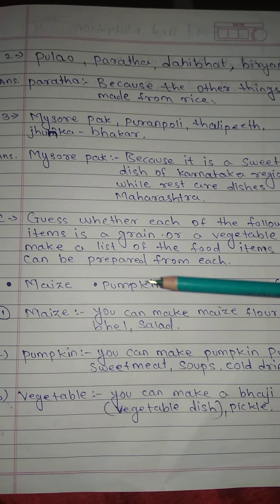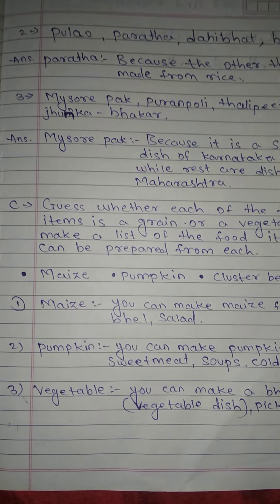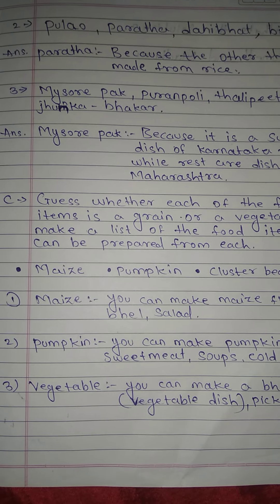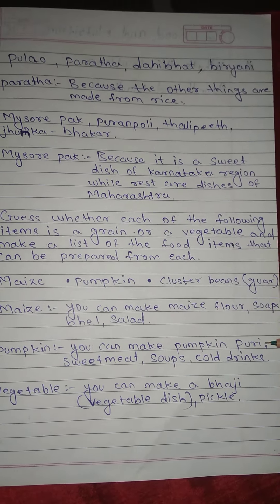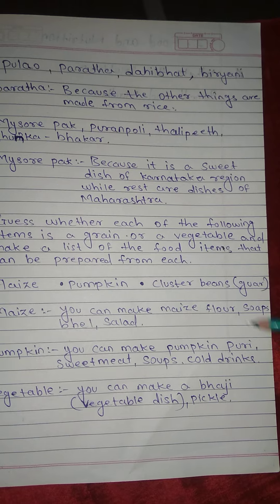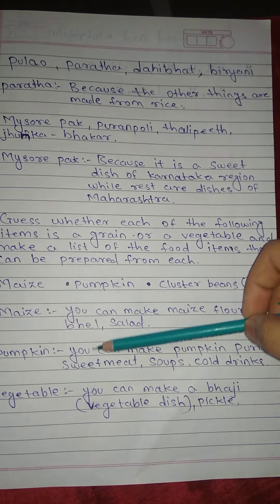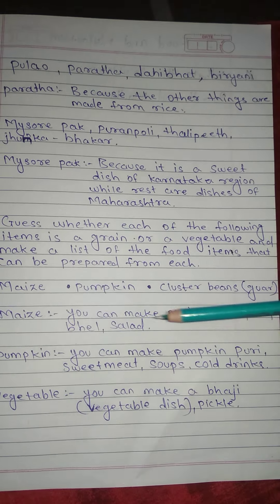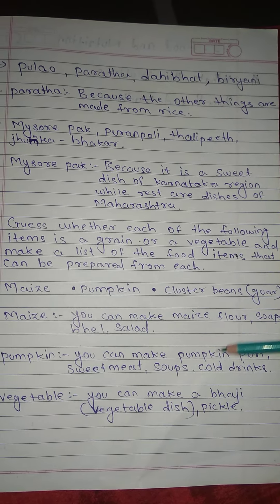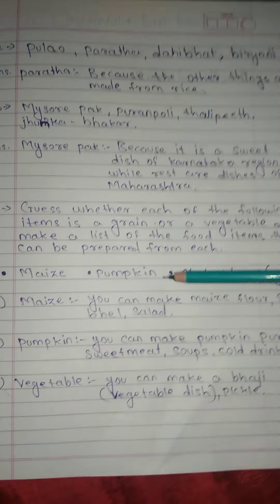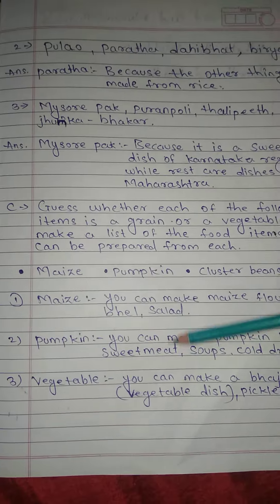No. 2: Pumpkin — you can make pumpkin vegetable, puri, sweet meat, soup, cold drinks.